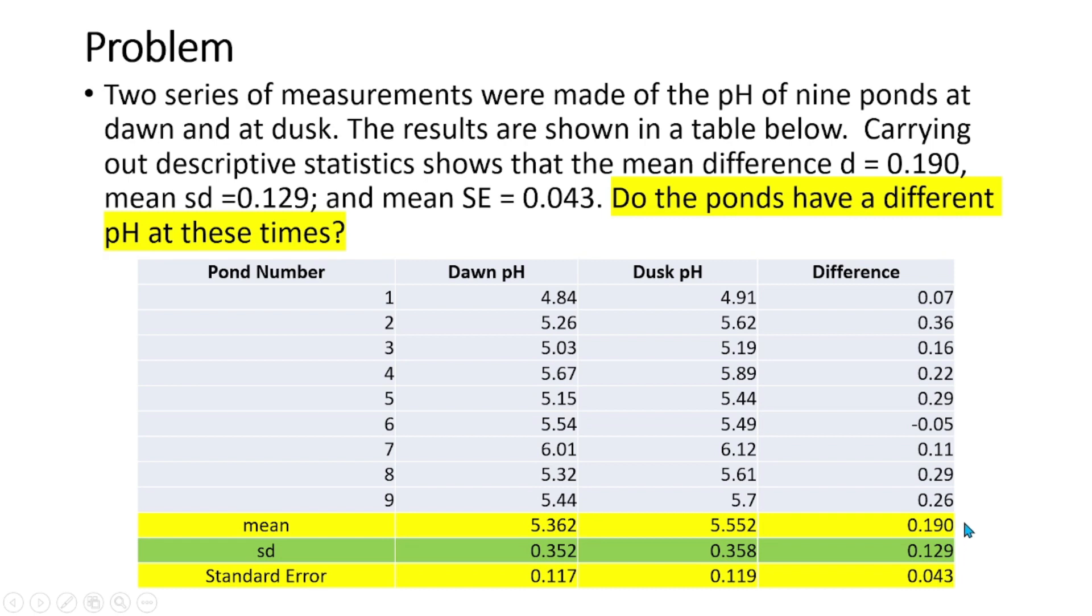Please take note of these data, especially the mean difference 0.190 and standard deviation of the difference which is 0.043, as we will be using these when computing the confidence limits.